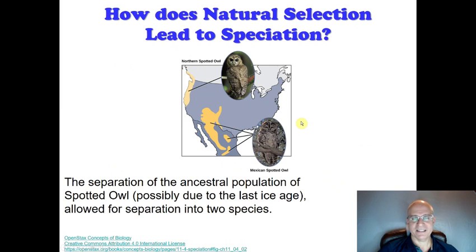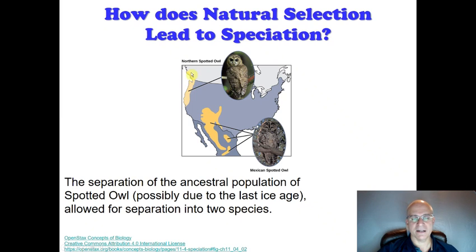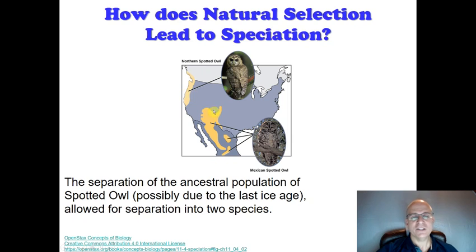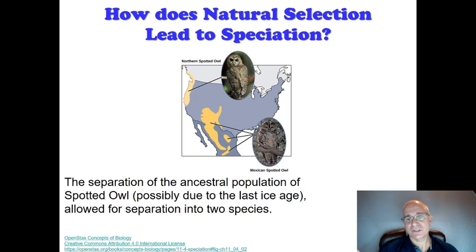A neat example is with spotted owls in North America. The northern spotted owl is found in California, Oregon, Washington State, and up into Canada. The Mexican spotted owl is found in the southwestern United States and in Mexico. They look somewhat similar. What we believe happened was that during the last ice age, these two populations were separated from one another for probably something like 10,000 years. Over that time, different mutations occurred in each population so that they are different enough that we would consider them to be different species today.